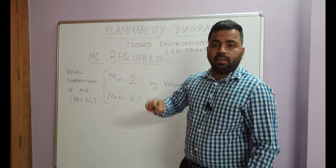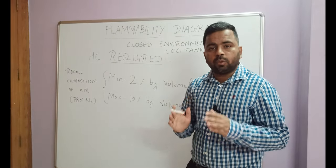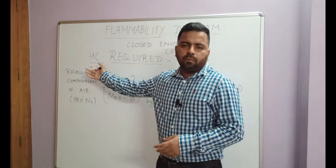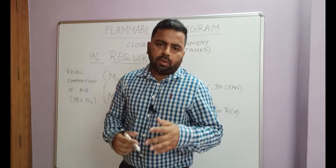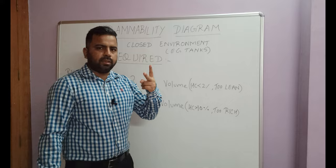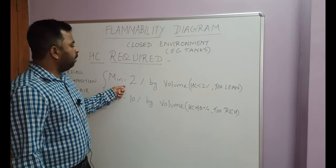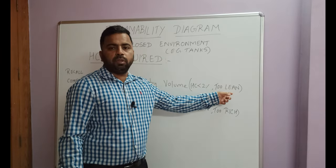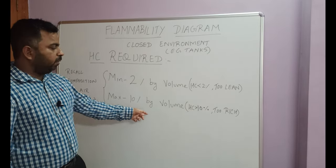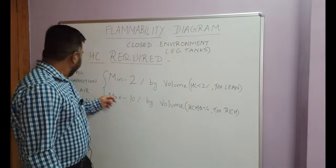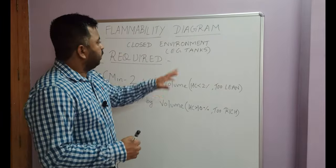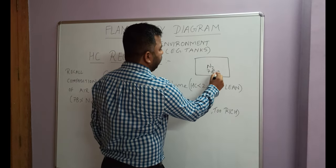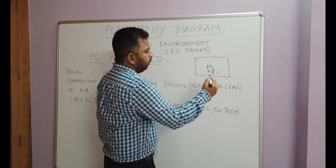Flammability diagram concept is applicable to closed environments, closed spaces, for example tanks. On tankers we have tanks, and that is why we are learning this concept. We have studied that minimum oxygen is 11% for combustion to take place. What about hydrocarbon? Hydrocarbon comes in two ranges: the minimum required is 2% by volume, and the maximum is 10% by volume.